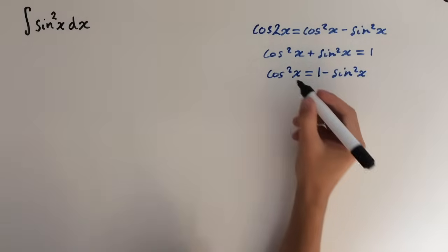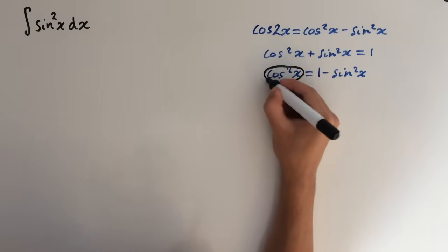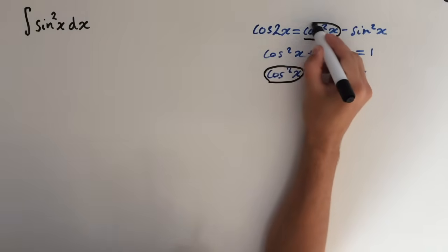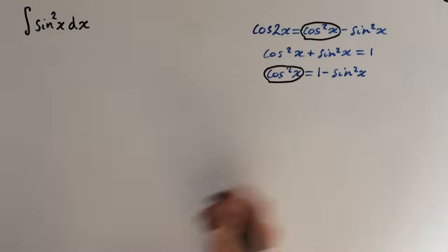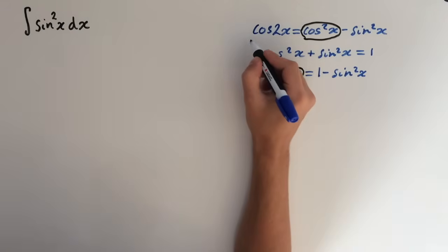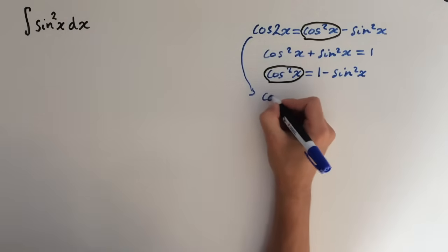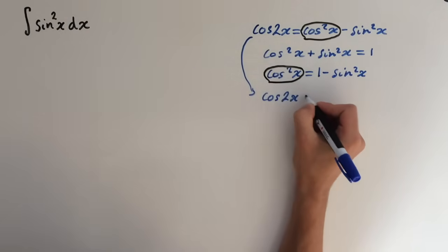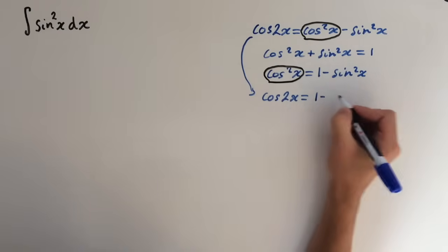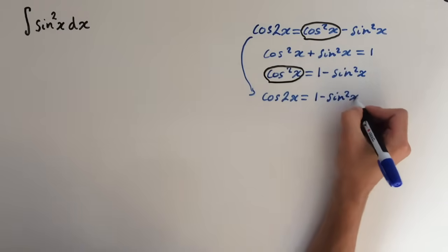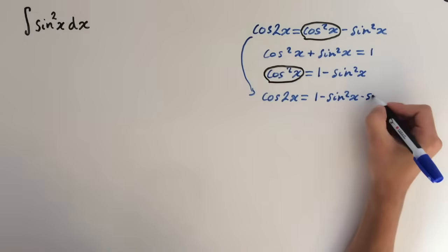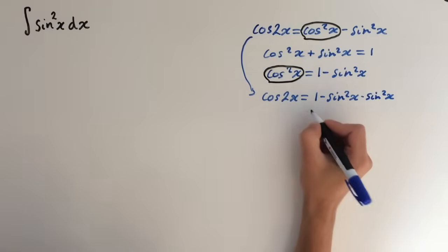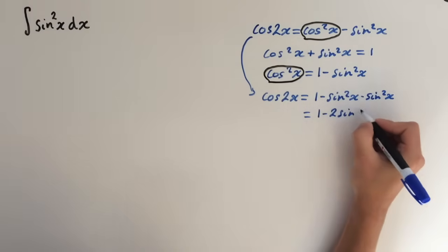So now we want to substitute this cos into this one. Cos of 2x equals 1 minus sin squared x minus sin squared x. So we can simplify this as 1 minus 2 sin squared x.